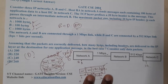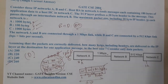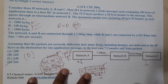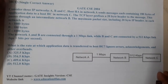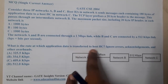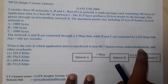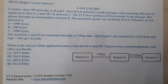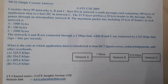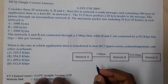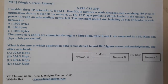It's quite an interesting logical puzzle type of question. This is a two-part question, so let us continue with part two. The second question asks: what is the rate at which the application data is transferred to host C, ignoring errors, acknowledgements, and everything? No parameters have changed.